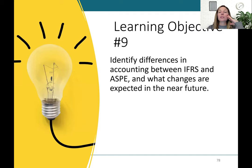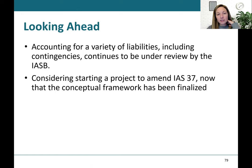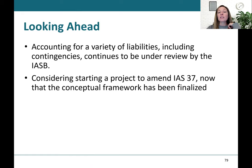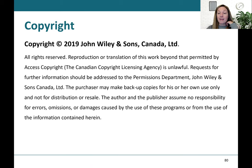For our final learning objective in chapter 13, we'll quickly recap the differences between IFRS and ASPE and any upcoming changes. There are not many changes here. The IASB is continuing to look at how to account for liabilities and contingencies, and may be starting a project to amend IAS 37, but nothing significant is on the docket. That concludes chapter 13 — please join me for some tutorial questions to work through examples for chapter 13, part two.